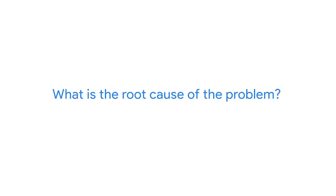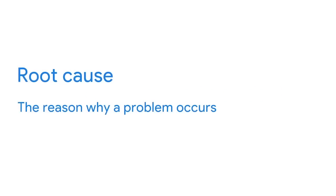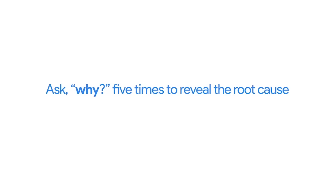Here's one that will come up a lot: what is the root cause of a problem? A root cause is the reason why a problem occurs. If we can identify and get rid of a root cause, we can prevent that problem from happening again. A simple way to wrap your head around root causes is with a process called the five whys. In the five whys, you ask 'why' five times to reveal the root cause. The fifth and final answer should give you some useful and sometimes surprising insights.